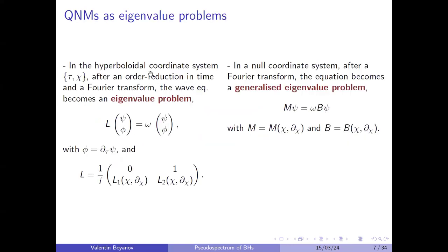In the hyperboloidal coordinate system, after an order reduction in time — defining an auxiliary field which is the first time derivative of our perturbation — and a Fourier transform, the wave equation takes the form of an eigenvalue problem. The operator on the left-hand side has a block form because of the order reduction in time, where L1 and L2 are differential operators that depend on the compactified radial coordinates.